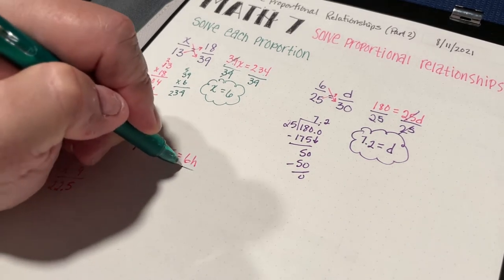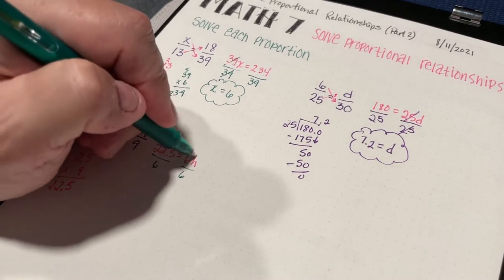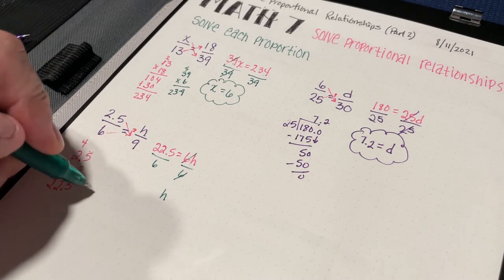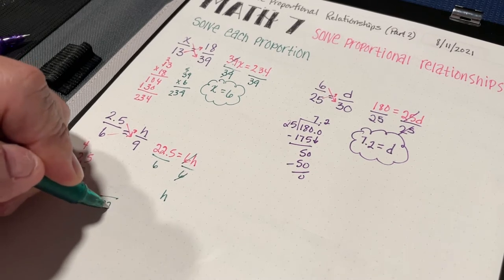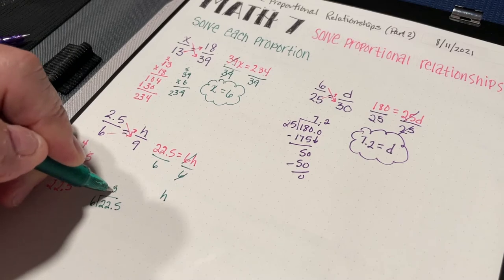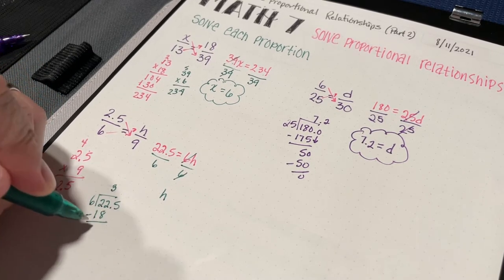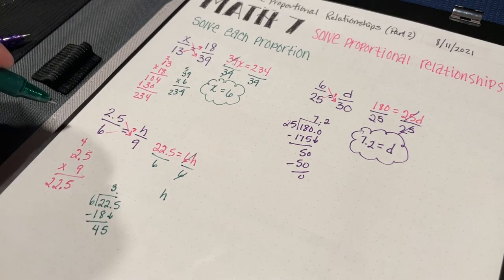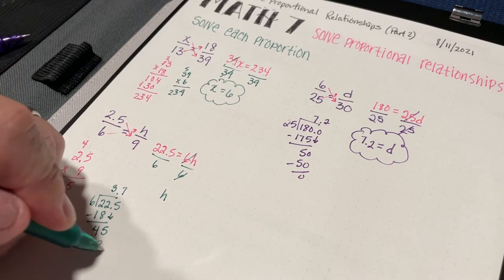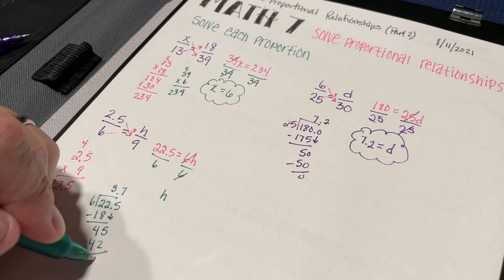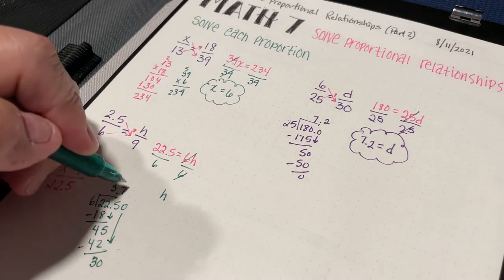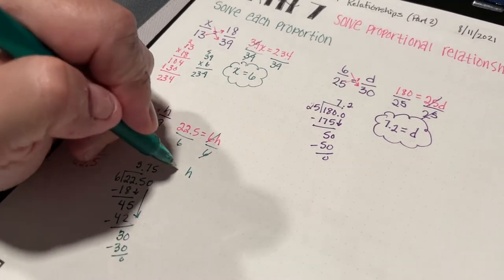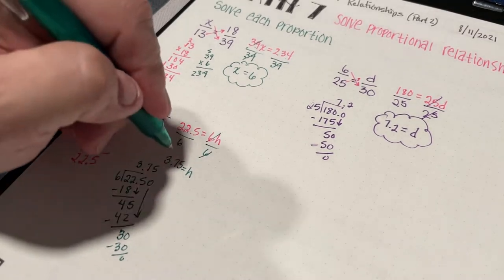To find h, I divide both sides by 6. 6h divided by 6 is just h. Now, 22.5 divided by 6: 6 goes into 22 three times, 3 times 6 is 18, remainder 4. Bring down the 5: 6 goes into 45 seven times, 7 times 6 is 42, remainder 3. Bring down a 0: 6 goes into 30 five times. So h equals 3.75.